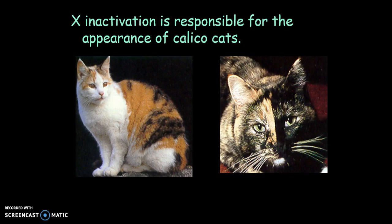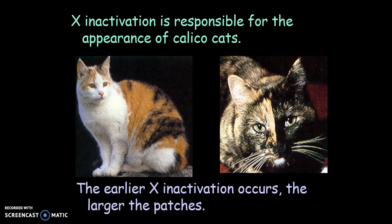This is also found in calico cats with their coat coloration — it is an X-linked trait. Each orange patch is made up of cells descended from a cell in which the X chromosome carrying the black coat color allele was inactivated. Each black patch is made of cells descended from a cell in which the orange allele was turned off. Calicos are almost always female because both orange and black alleles are required to produce those mosaic patches. The only way to have a calico male is if he were XXY, which is very uncommon.